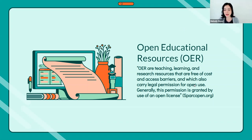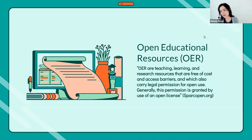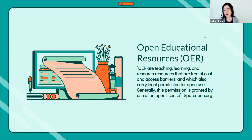Here we have a definition from Spark Open: OER are teaching, learning, and research resources that are free of cost and access barriers, and which also carry legal permissions for open use. Generally, the permission is granted by use of an open license. I like this definition because it captures the free access barriers part but also emphasizes the legal permission element — that's what really separates OER from just free stuff you find online. It has a Creative Commons license.